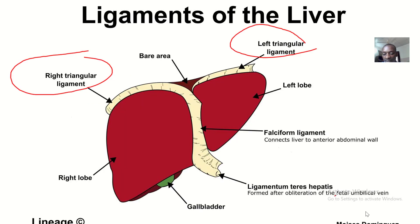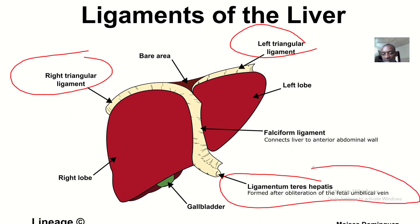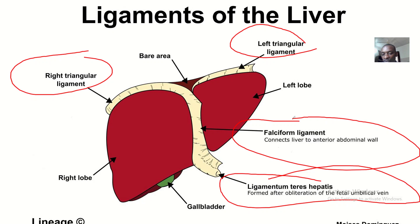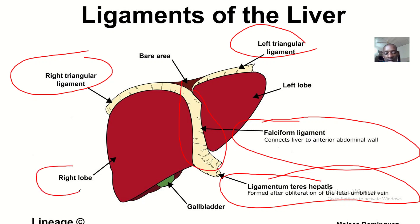The ligamentum teres is found inside the falciform ligament — the falciform ligament is the outer structure, and the ligamentum teres is inside it. You can see that the falciform ligament separates the liver into the right lobe and the left lobe, and it is positioned anteriorly.